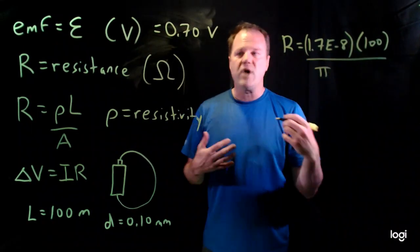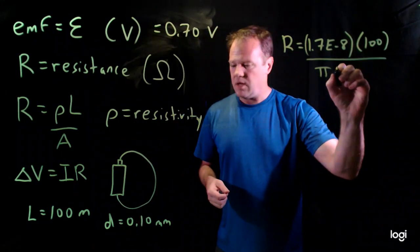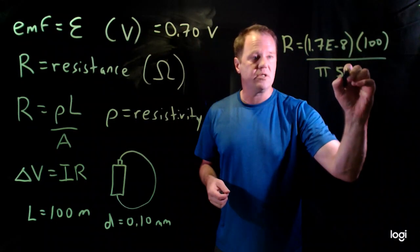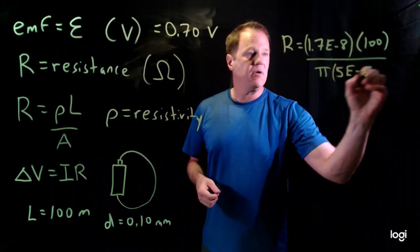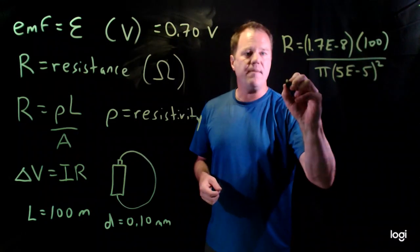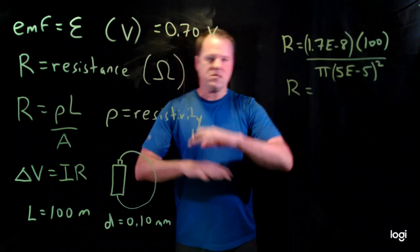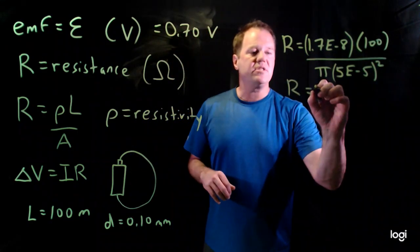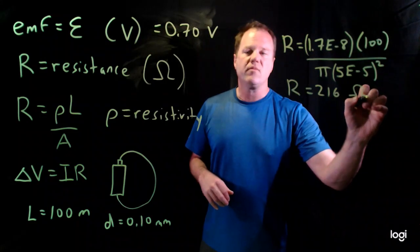pi times the radius. So I divide this by two and convert to SI units of meters. So it's 5 times 10 to the minus 5 meters. And I square that. And so I find that this particular copper wire has nothing to do with the battery. The wire itself has a resistance of 216 ohms.